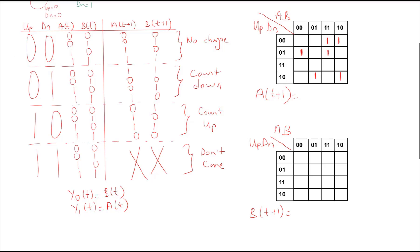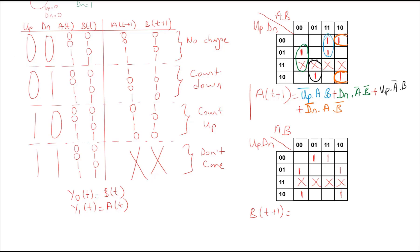For the 1,1 input case, I have don't-cares. Similarly, we can fill out the Karnaugh map for BT+1. Now let's group the ones in the AT+1 Karnaugh map. This is one group, this is another group, this is the third group, and this is the last group. Then we will get this equation.